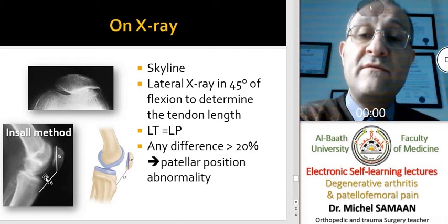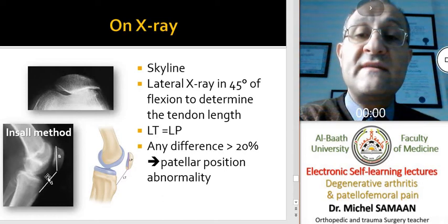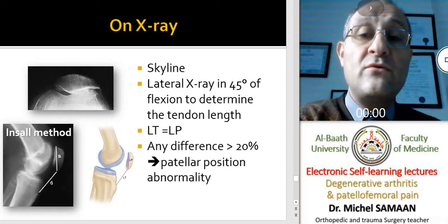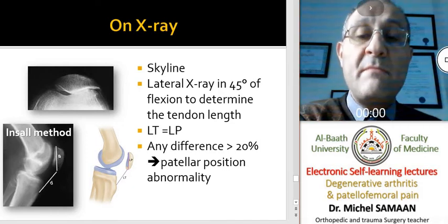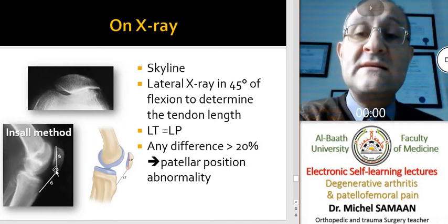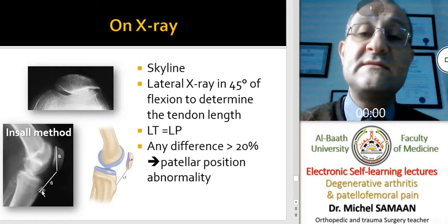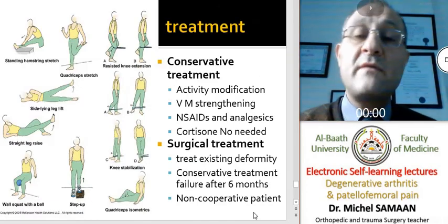On the lateral view of the knee, we can measure the length of the patella and the length of the patellar tendon. In normal individuals, this ratio is approximately one. But if patella alta is present, the length of the patellar tendon exceeds the length of the patella.